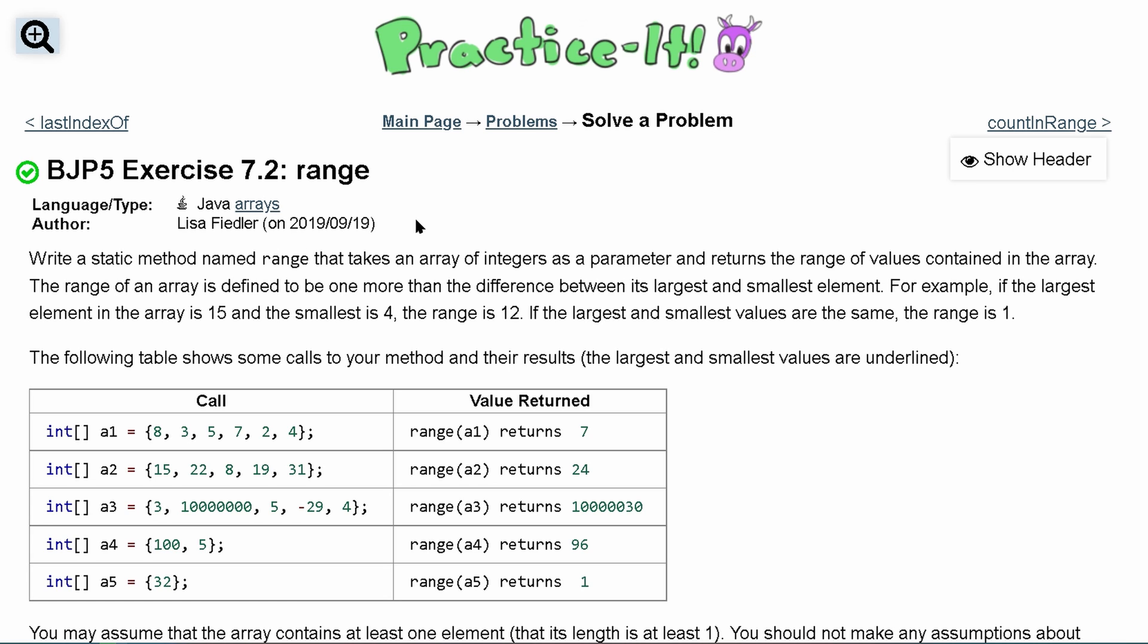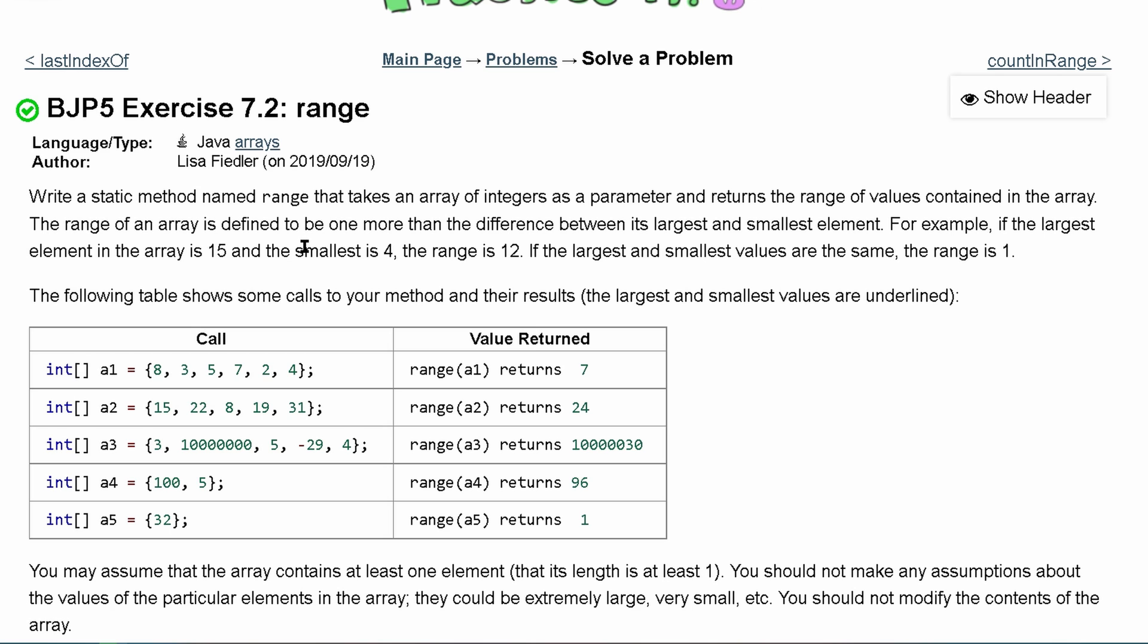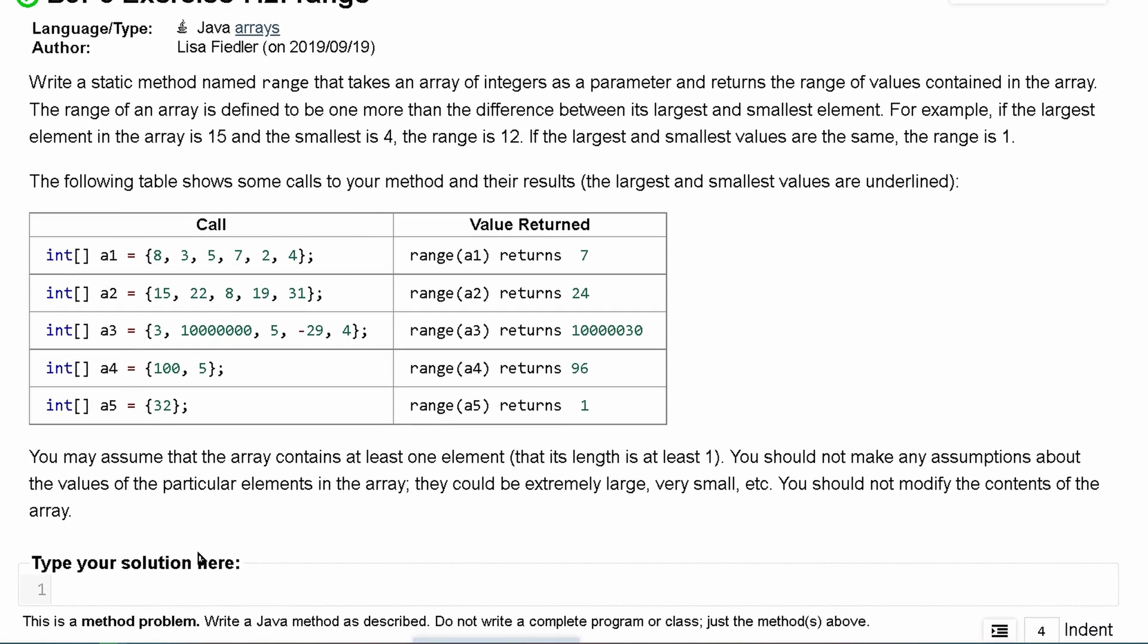In this practice exercise 7.2 range, we're going to write a static method named range that takes an array of integers as a parameter.